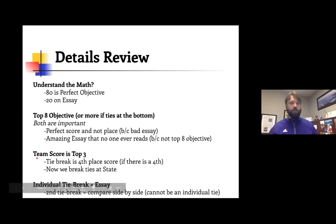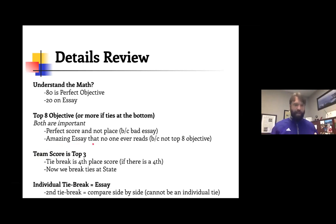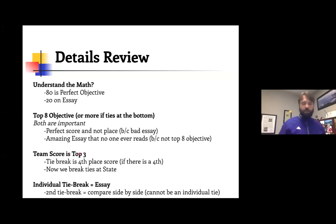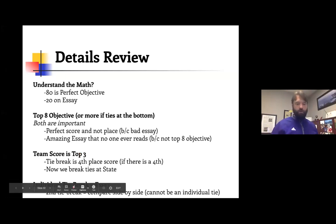To review the basics: 80 perfect on the objective plus 20 perfect on the essay gives you 100. Top eight objective scores will be graded, more if there are ties, and the essay breaks those ties. You need a blend — an amazing essay no one reads, or a great objective score but an essay that doesn't come through, and you won't close. The tiebreaker for the team is the fourth-place member's score, which applies all the way to state.